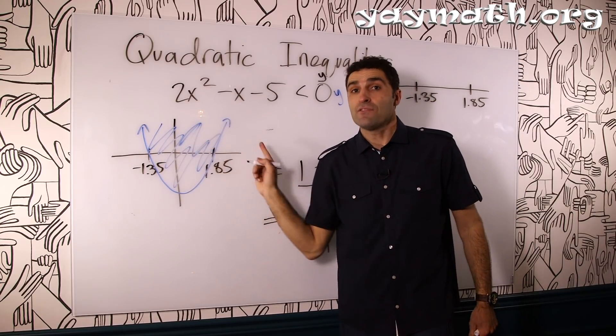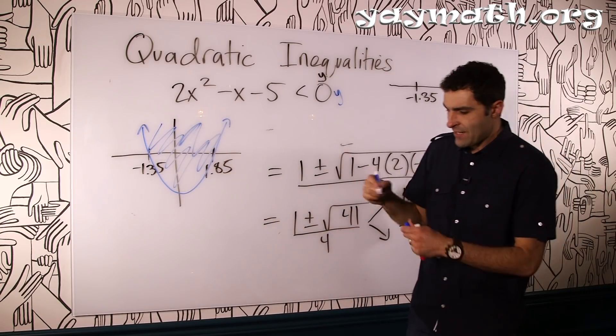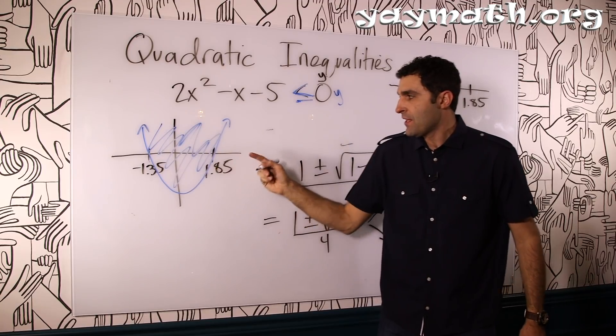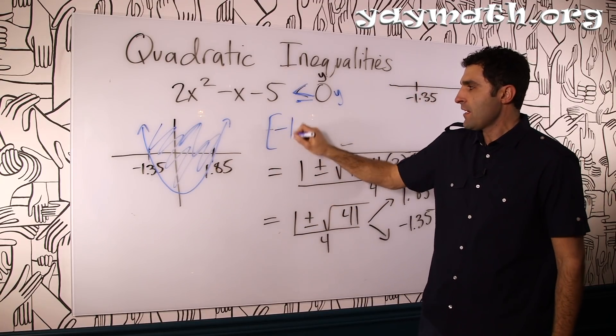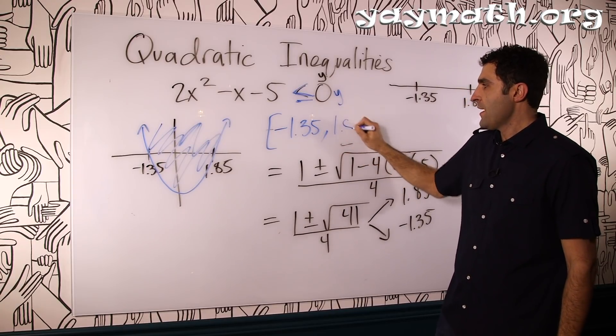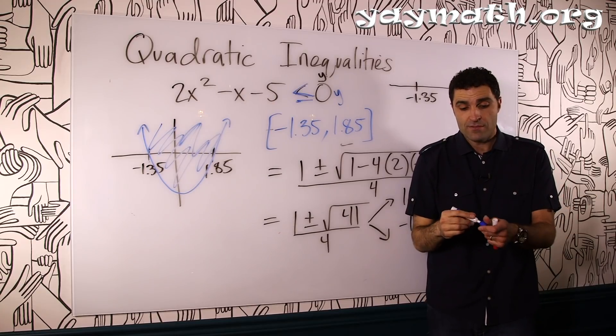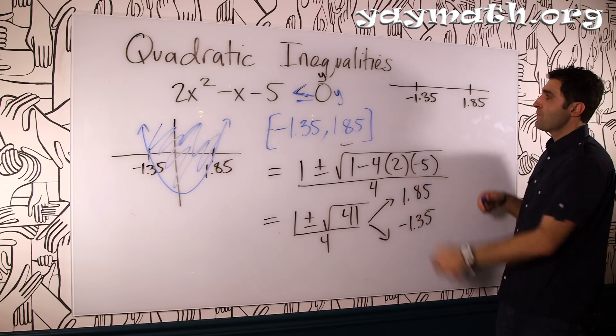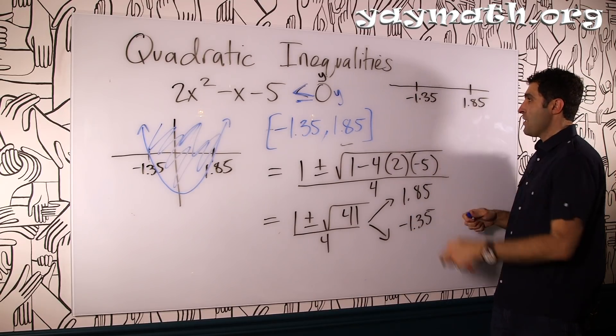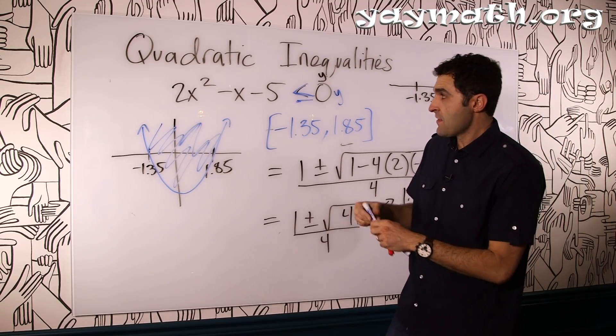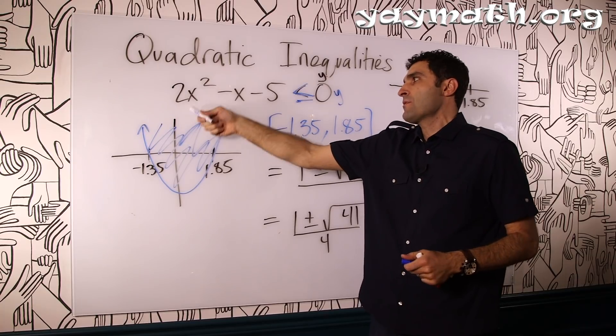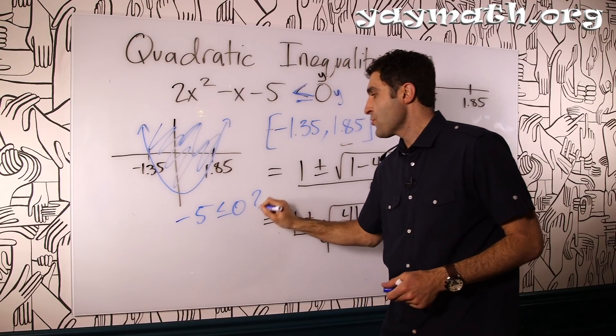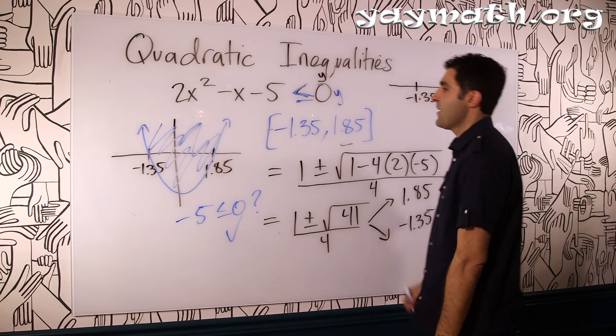So, our solution is between these two values. Our solution set. And let's actually practice that thing now. So, suppose I change it to or equal to. It's everything between these two. That would be inclusive negative 1.35 to 1.85. Inclusive. And this problem is solved. Let's go ahead and confirm that everything between here should work. And then everything beyond will not. All right? Let's do it. Let's go between. Let's do like the 0. Let's do the 0 one. Plugging in 0 here, we get 0. 2 times 0 squared is 0 minus 0 minus 5. So, we'll get negative 5 is less than or equal to 0. Is this true? Yes, it is. So, there's your solution set.